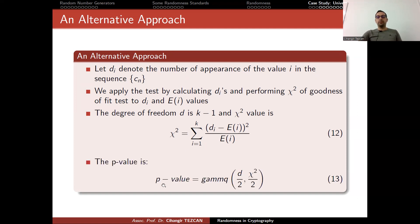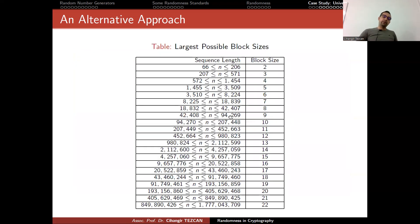You simply subtract these two values, take the square and divide it with the expected value. This is the definition of chi square. Then you sum all of this. The p-value is obtained from the gamma Q function of this chi square divided by two and d divided by two. d is the degree of freedom. In our scenario, it's K minus one. We modified the Maurer's test. And now we can perform this test on sequences as short as 66 bits by choosing the block size 2.